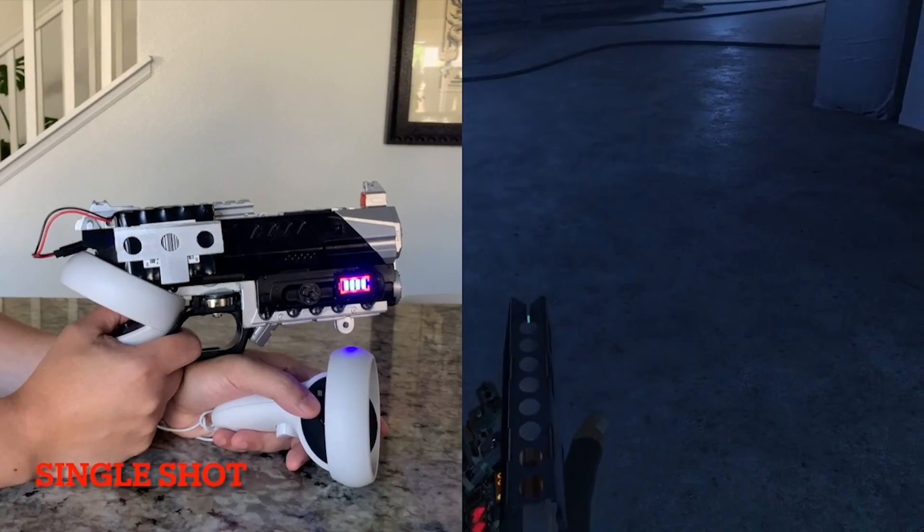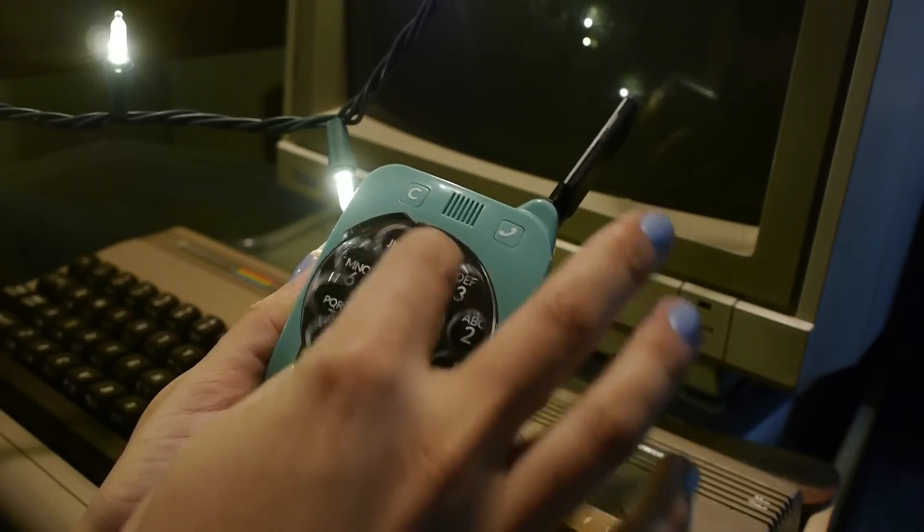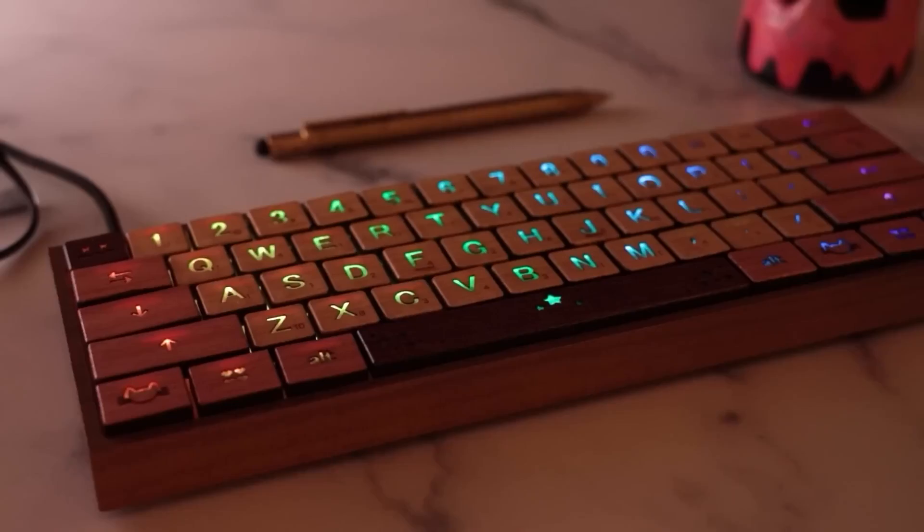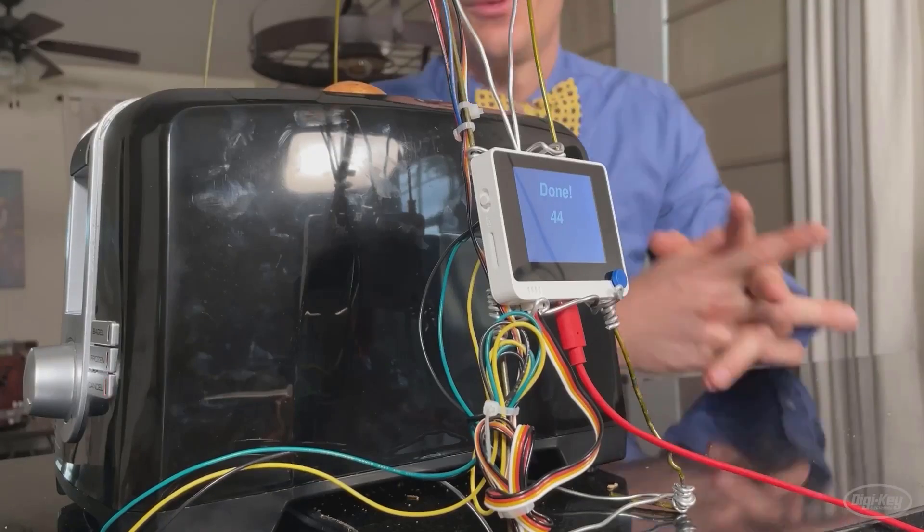This week on Maker Update, adding a kick to virtual reality, Arduino 2.0, a rotary cell phone to call your own, hardscrabble keyboards, rolling the dice, and better toast for machine learning.